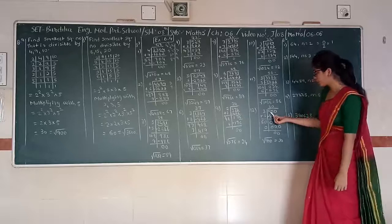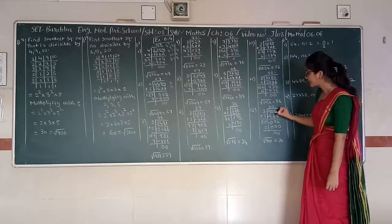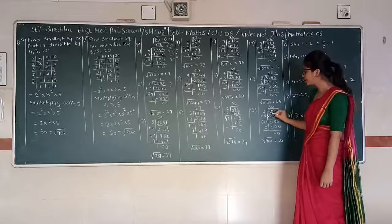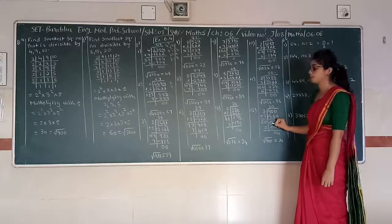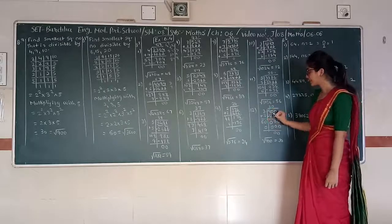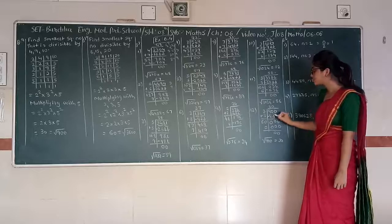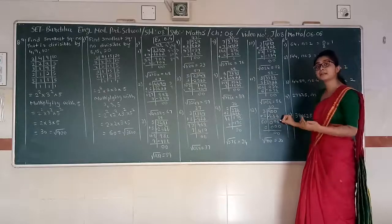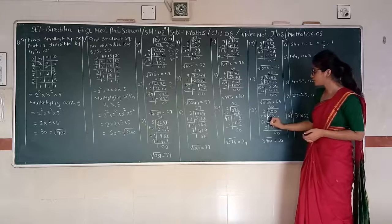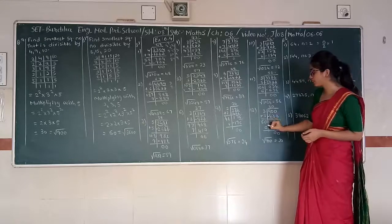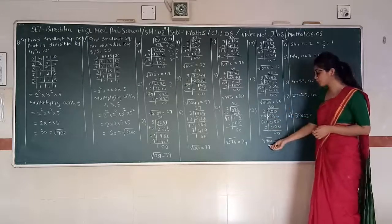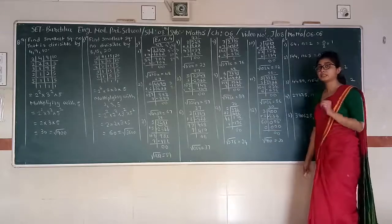Next: 900. Two pairs are 9 and 00. 3 squared is 9. 9 minus 9 gives 0. 3 plus 3 gives 6. We bring down 00. Multiplying by 0 gives 0. Square root of 900 is 30.